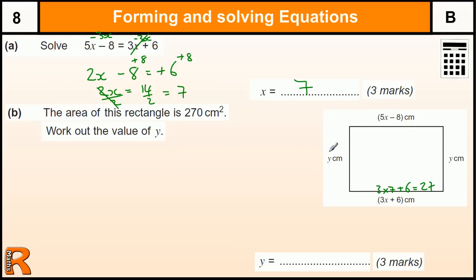So this equation we're going to form from here is just 27y, because you've got the length times the width. That equals the area, which is 270 centimeters squared. Now from there, it's simple and clear to say that y equals 10 centimeters. So 3 marks for that.